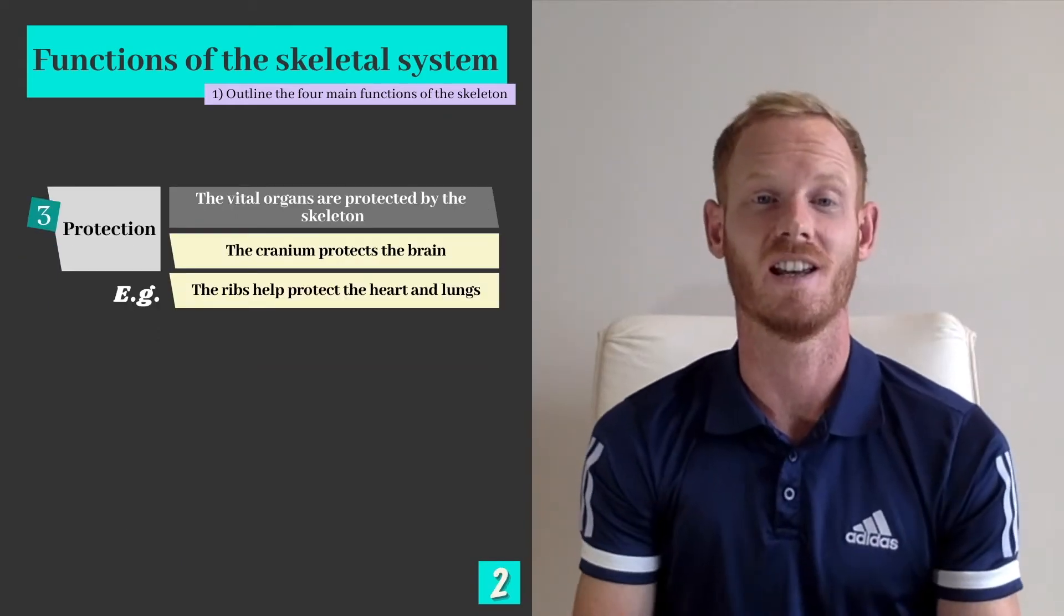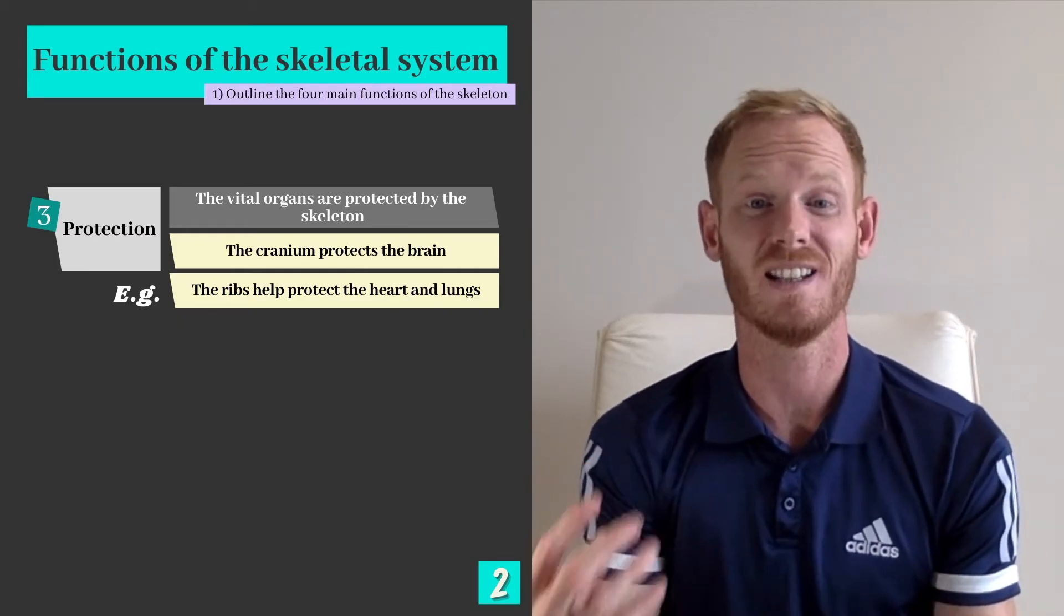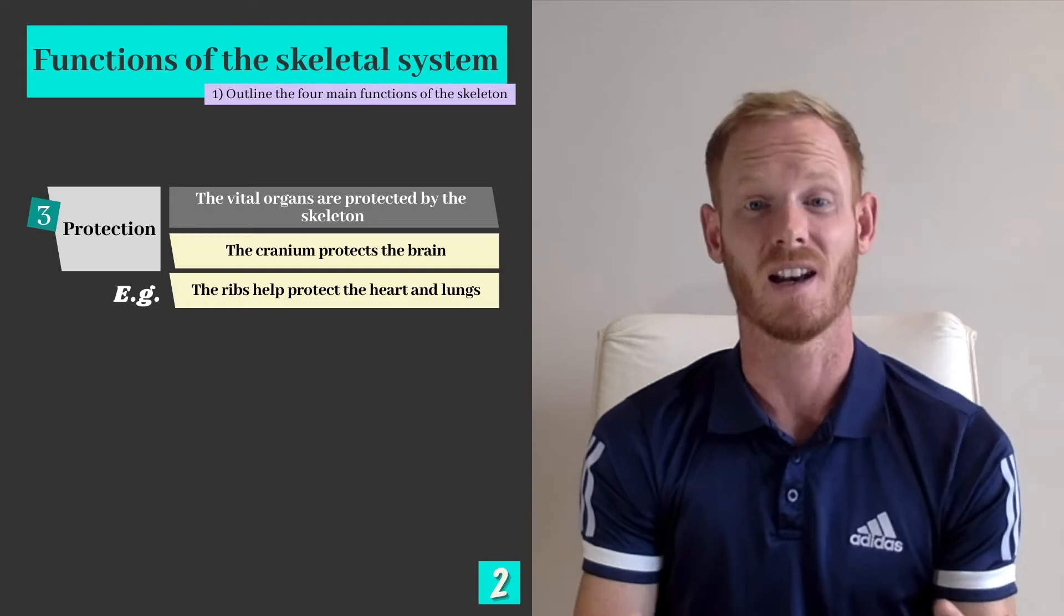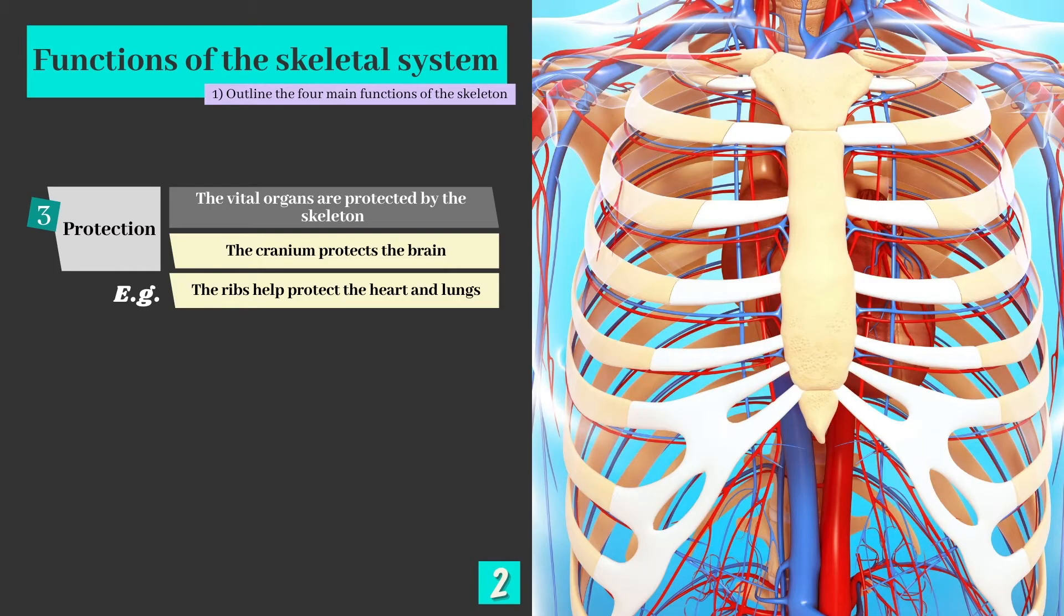Our third function is protection. Our body obviously contains many vital organs which need to be protected by something. A couple of examples are the brain which is protected by the cranium and the heart and lungs which are protected by the ribs and the sternum.